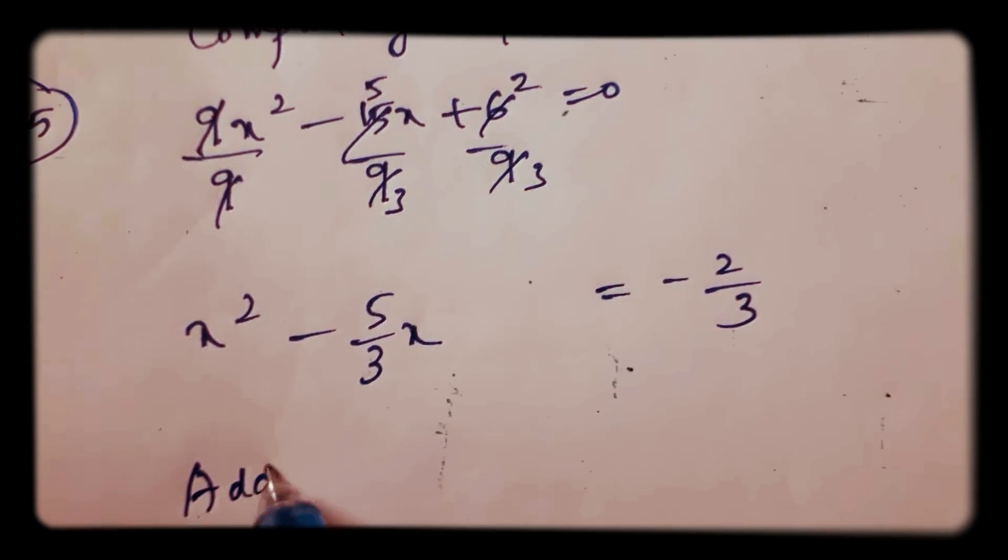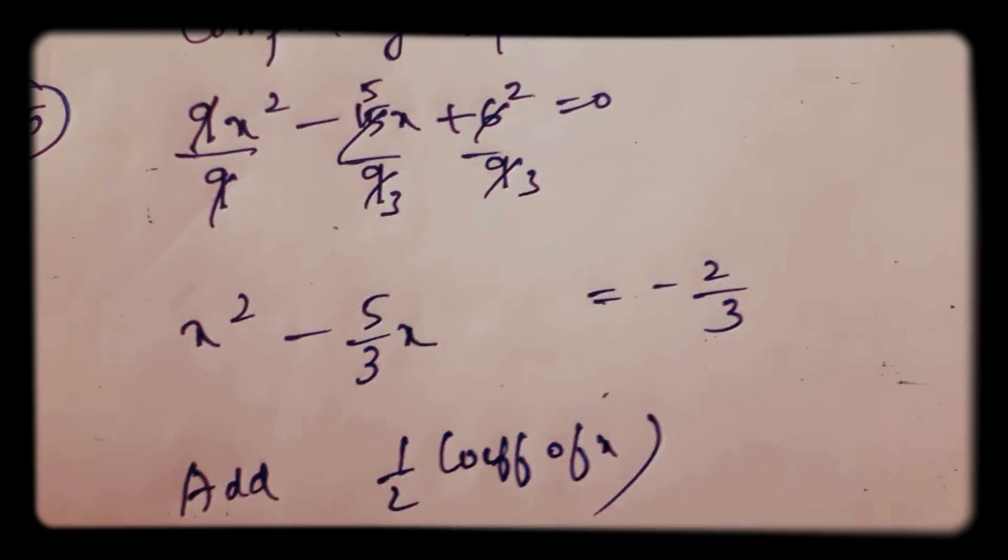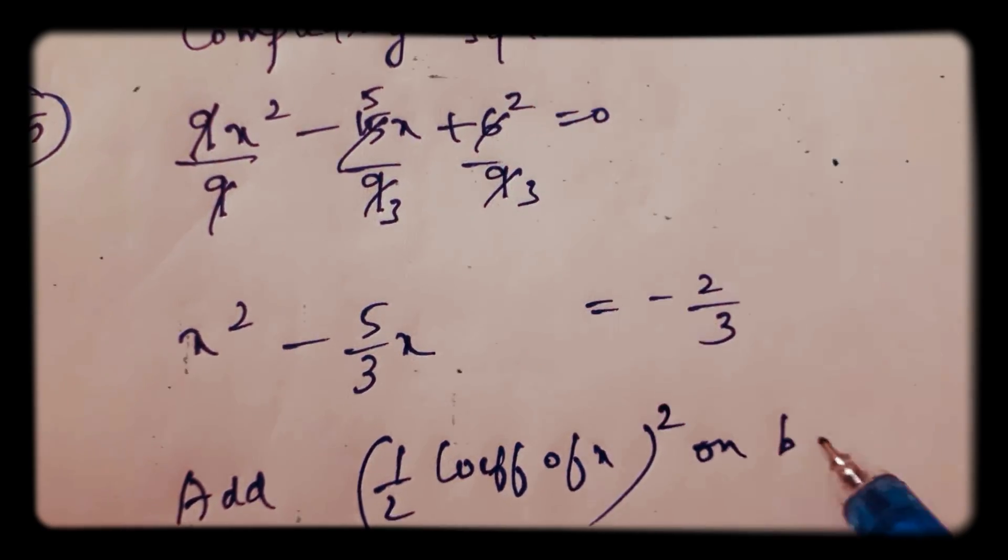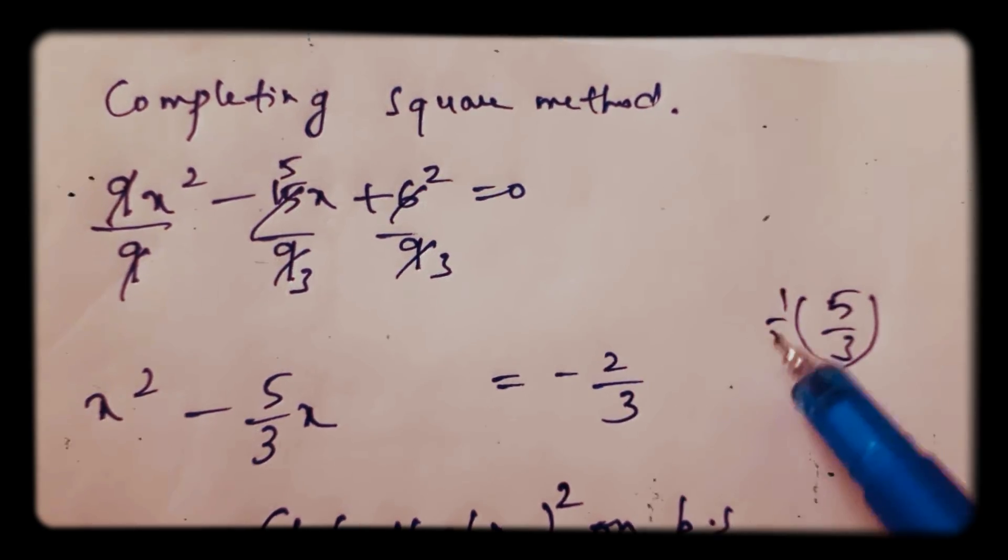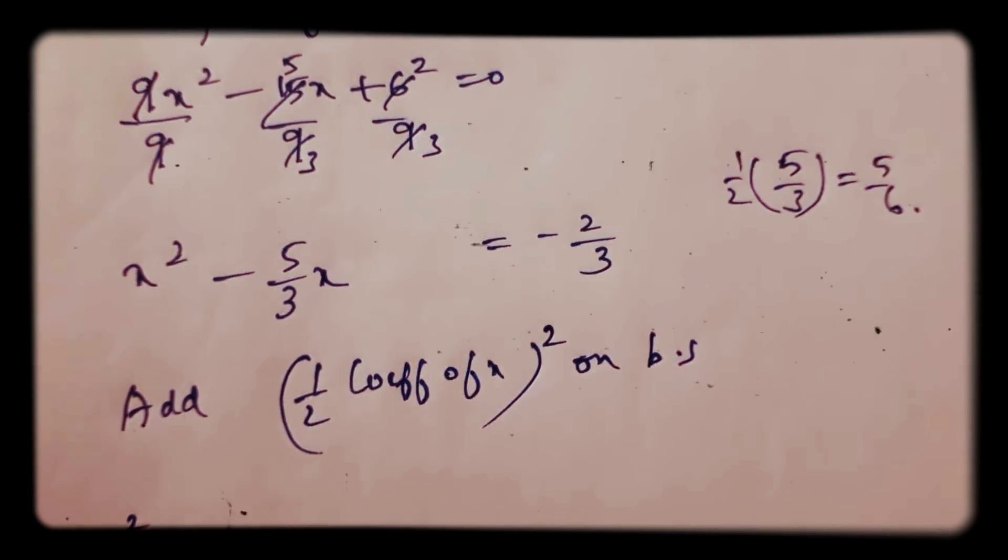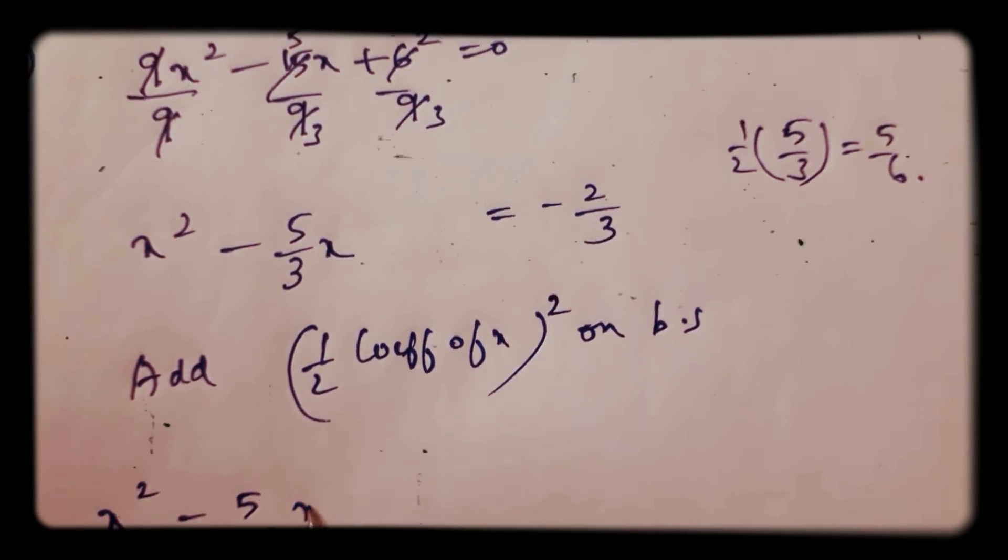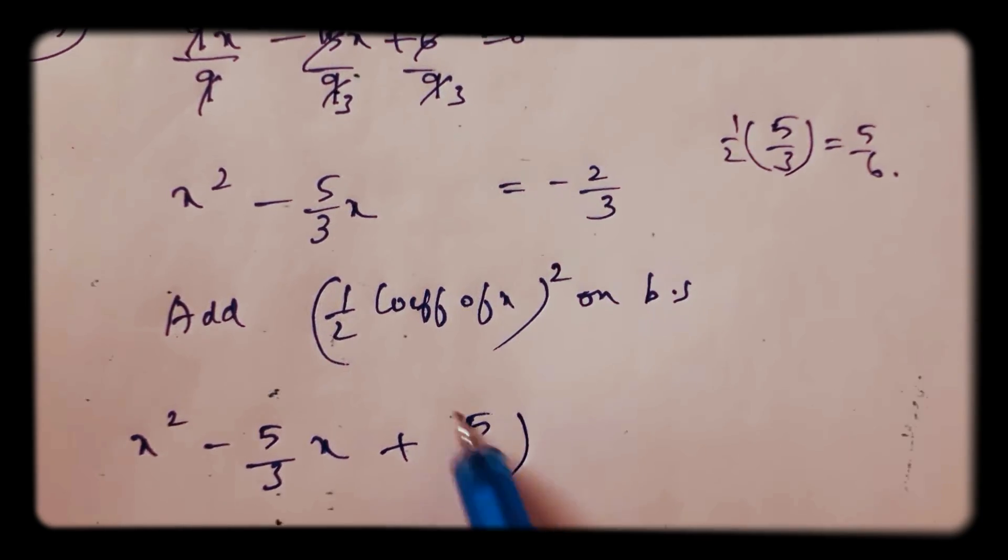Here add half of the coefficient of x whole square on both sides. Here coefficient of x is 5 by 3. If you do it half, it will become 5 by 6. So x square minus 5 by 3x plus 5 by 6 whole square.